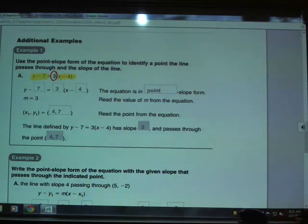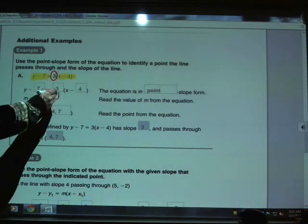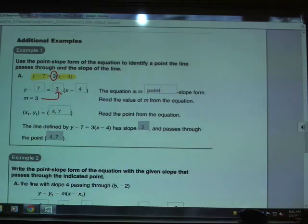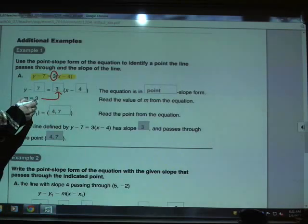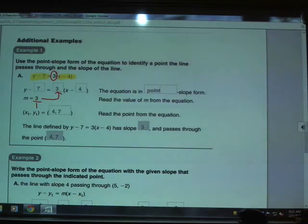So, we've got y minus 7 equals 3 times x minus 4. The first thing that should be really easy to spot is the slope here. The slope of this line is the 3, as we pointed out. And of course, we would normally write that as a fraction, so we would write that as 3 over 1.